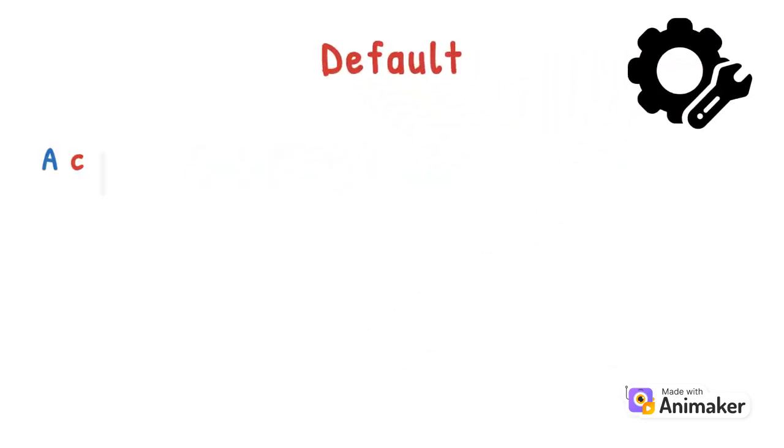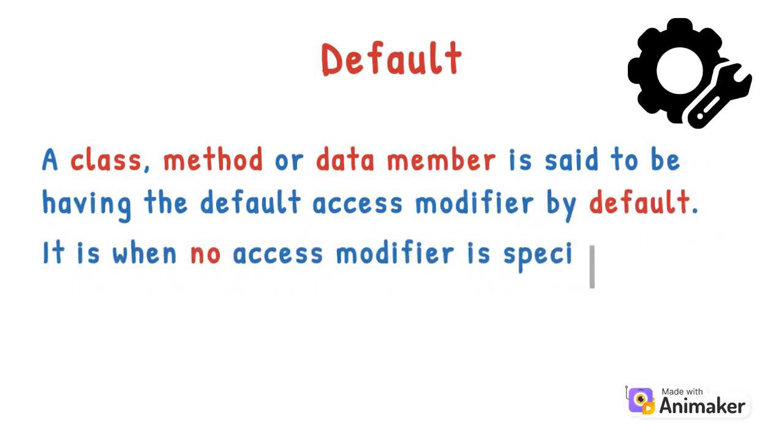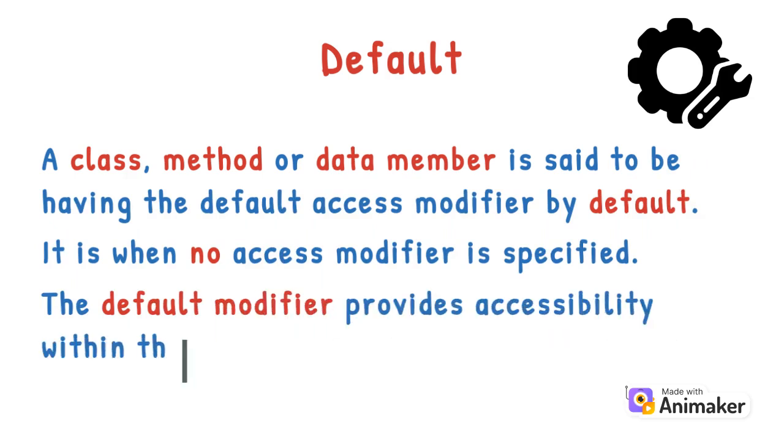Starting with default. A class, method, or data member is said to be having the default access modifier by default when no access modifier is specified. The default modifier provides accessibility within the same package only.